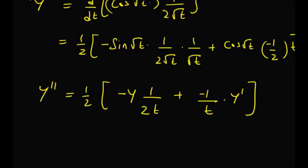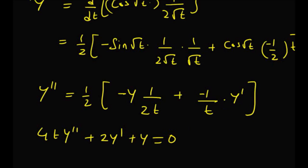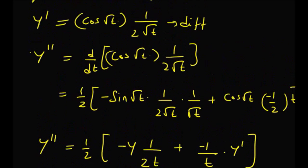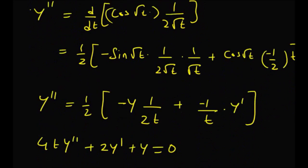Upon simple rearrangements, we can rewrite this equation as 4t·y'' + 2·y' + y = 0. This is the differential equation corresponding to y = sin(√t).